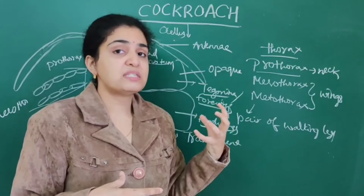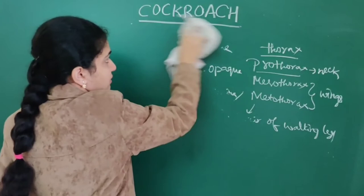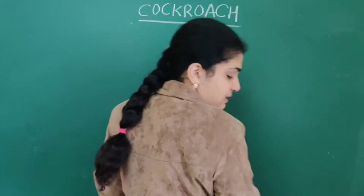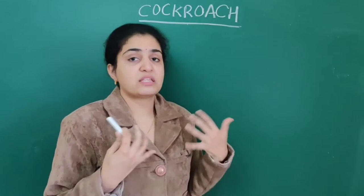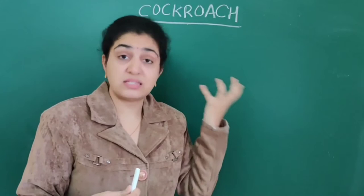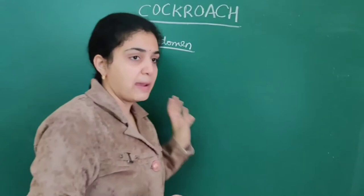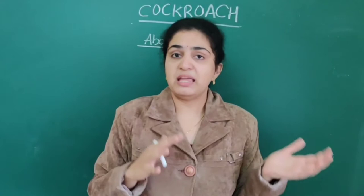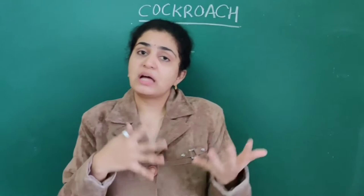The third part is abdomen. Abdomen is different in males and females — unlike earthworm which is hermaphrodite with both sexes in the same individual, cockroaches have separate male and female individuals. Both male and female cockroaches have ten segments in the abdomen.